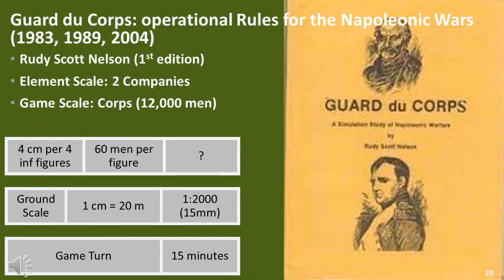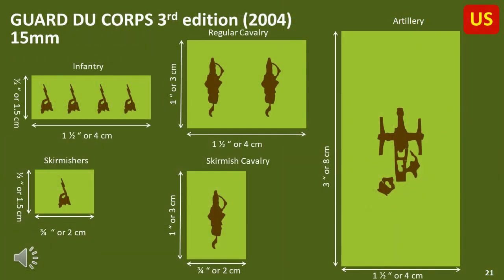GuardDecor has gone through many different versions. We'll only look at the 2004 version, which is available as a free download and is very complete and detailed — I suspect the best of the three versions, certainly better than the second version from 1989. GuardDecor 3rd Edition uses the same base width for all troop types, with skirmishers on half bases, similar to the old WRG system.